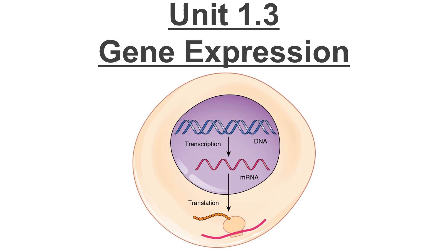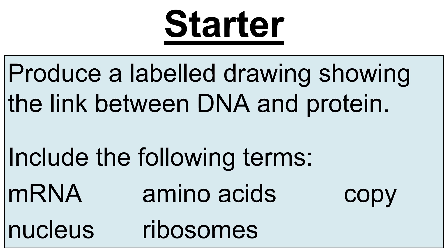So pens, papers at the ready. If you remember from National 5 in unit 1, when we sort of introduced you to DNA, part of it was to do with how you go from having DNA to making a protein. So produce a labelled drawing showing the link between DNA and protein and include the following terms: mRNA, amino acids, copy, nucleus and ribosomes. You can do it as a sentence as well. Press pause and see if you can do that, and we'll see if you've remembered correctly.